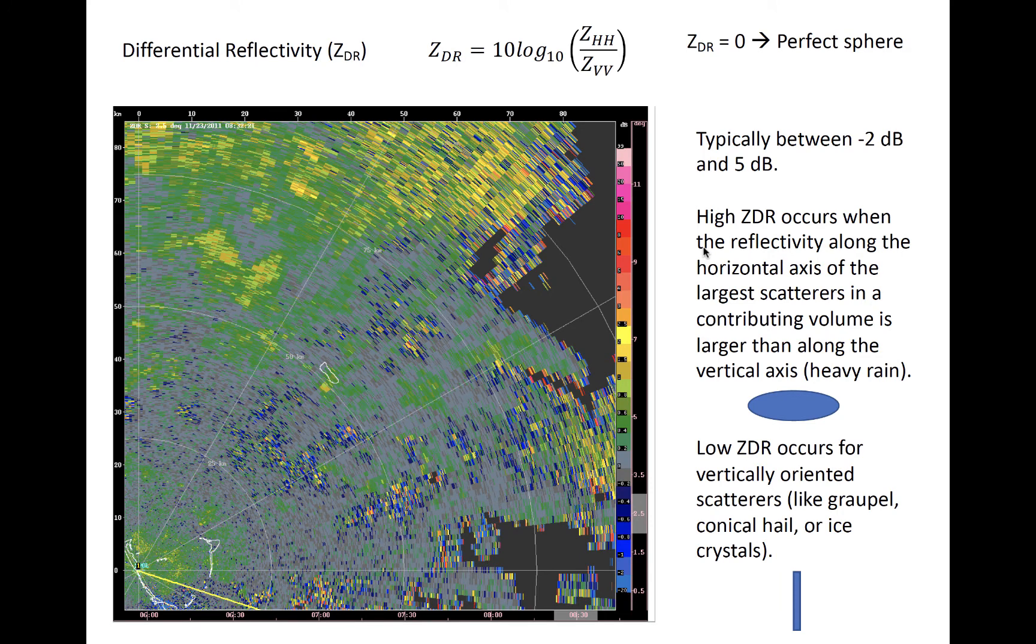The first dual polarimetric variable we will discuss is differential reflectivity, also known as ZDR. It is the ratio of the horizontal to vertical radar reflectivity factors expressed here on a logarithmic scale. The two subscripted H or V letters in the variables denote the polarization of the transmitted, the first letter, and returned signal. So, for example, ZHH is derived from the return power in the horizontal polarization for a transmission that was also horizontally polarized. ZDR is in the logarithmic scale measured in decibels or dB.